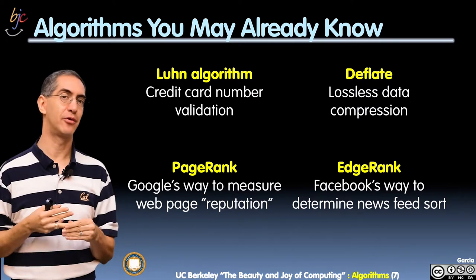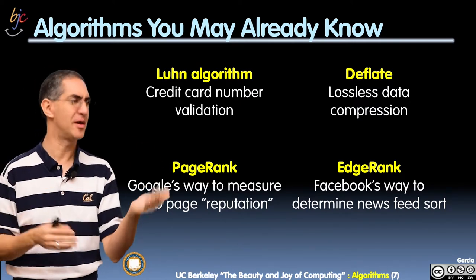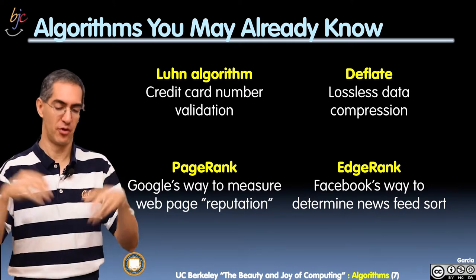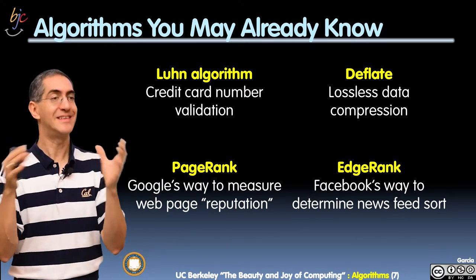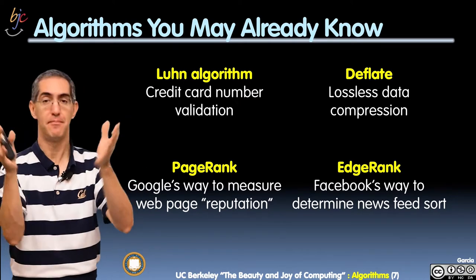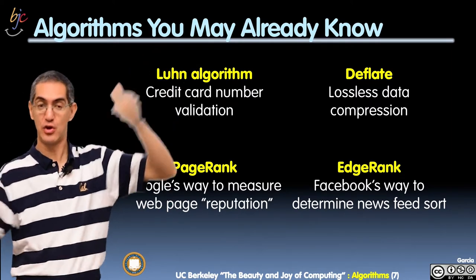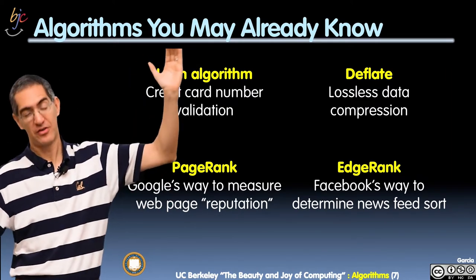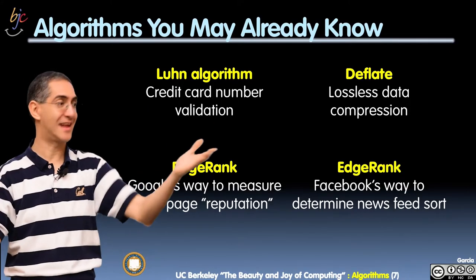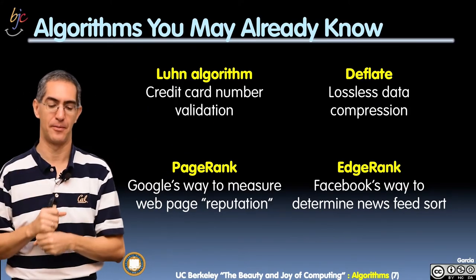Deflate is a very common algorithm for lossless compression. We'll talk about lossy versus lossless compression later. Deflate is an algorithm used for compressing data in a way that means you lose no data — you can take a big file with a lot of white space or a picture with many blank areas, compress it down, and when you decompress it you get exactly the original again. Really powerful, and that's different from lossy compression.